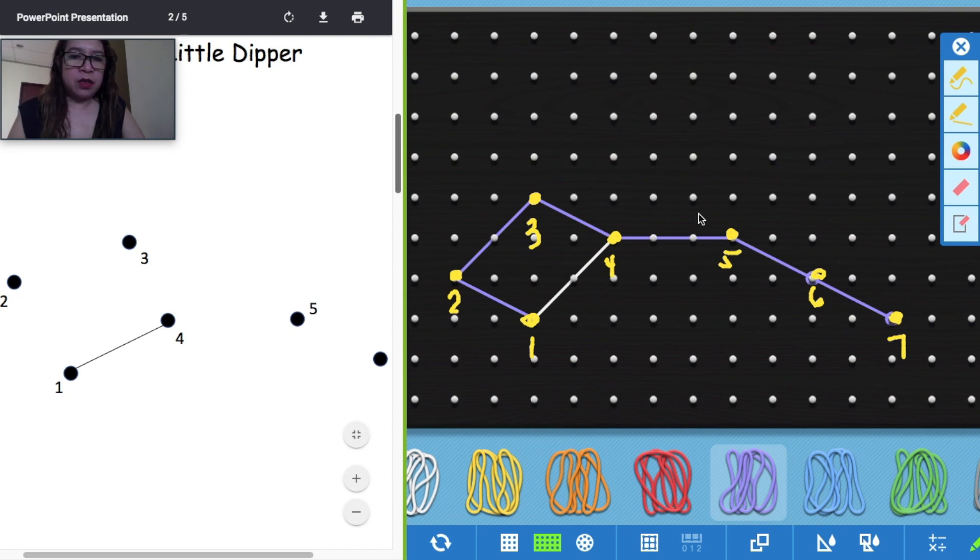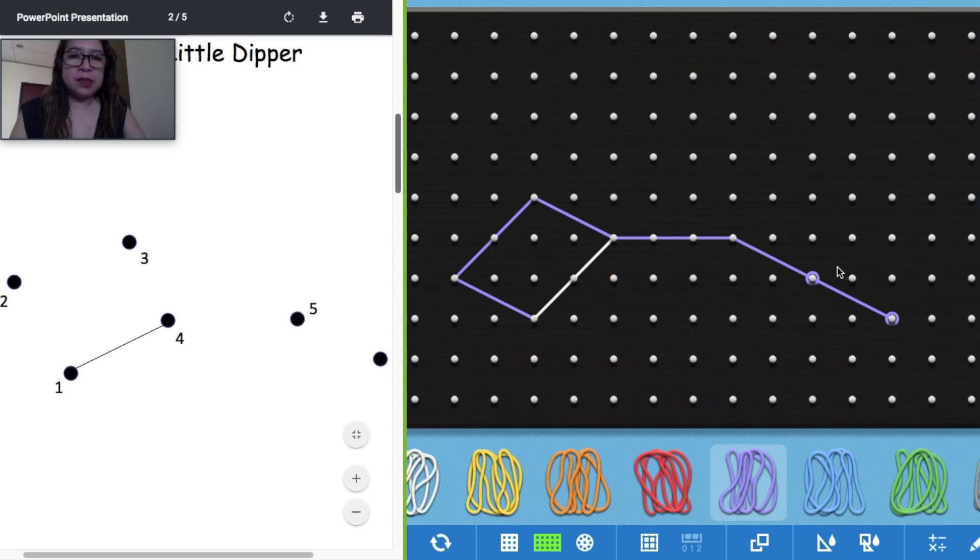Then clear your drawing by clicking the X here to remove all the dots or the numbers. There you go. So we have now our pattern of Little Dipper. So try to make your own. Let's try another one.